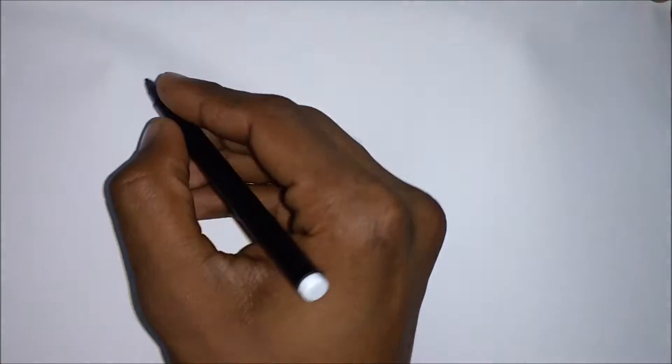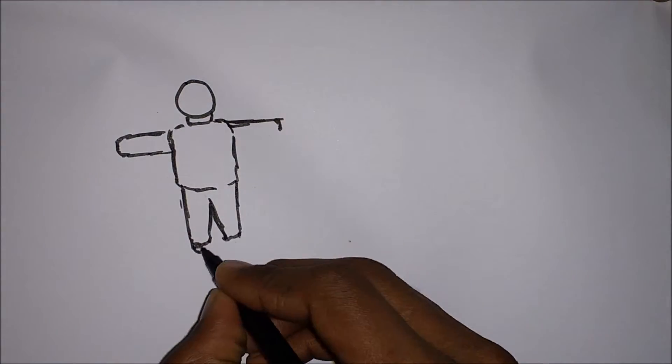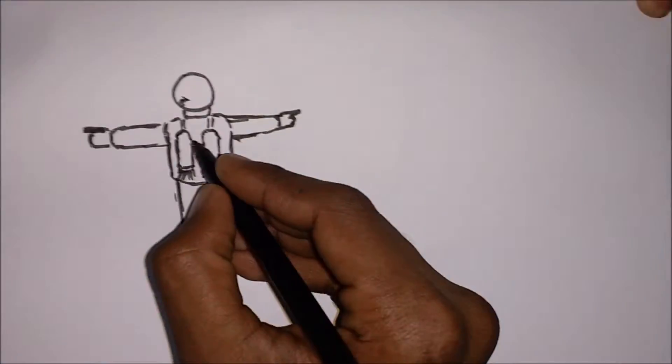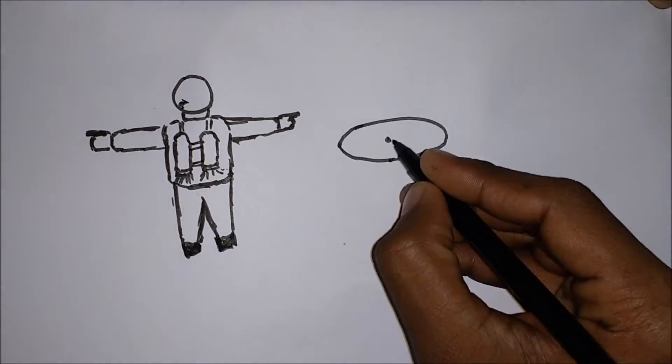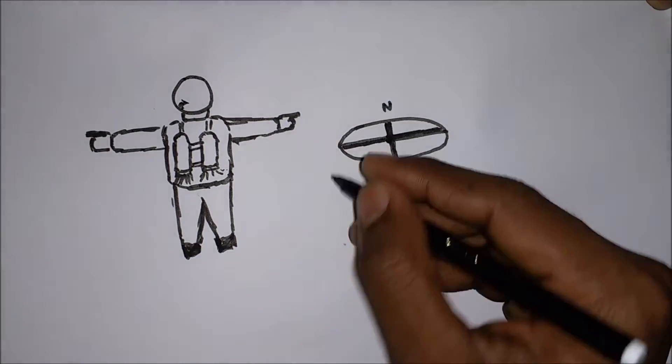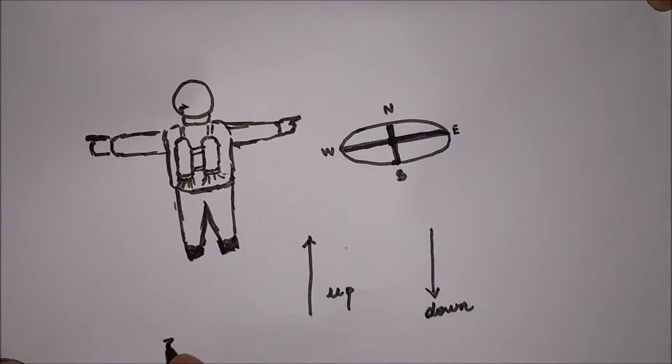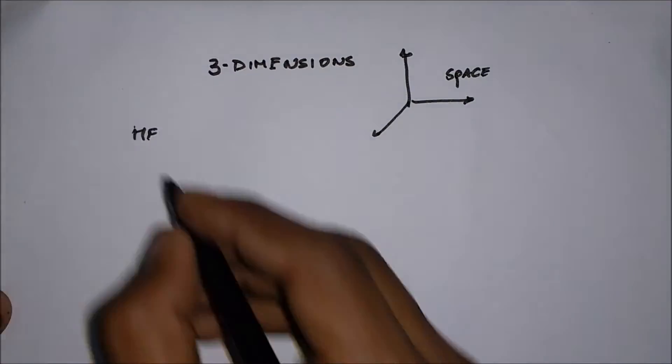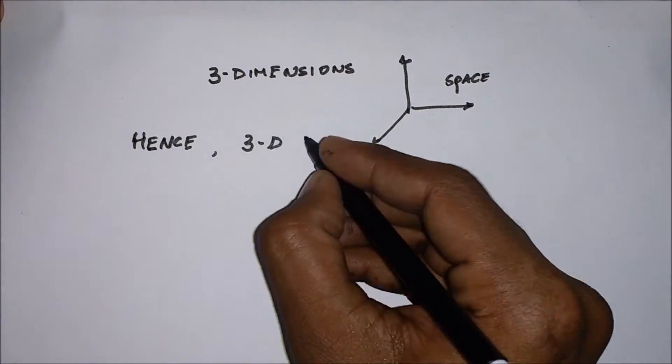Similarly, consider John. He can travel east, west, north, or south. He may even travel up and down. Hence, we can say that John perceives the space around him to be three-dimensional, or he needs three coordinates to specify his position in the space and his motion through it.